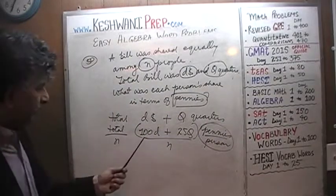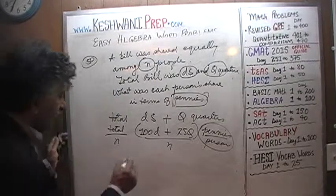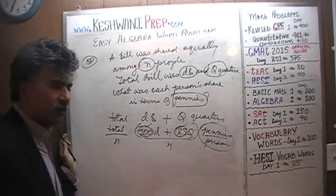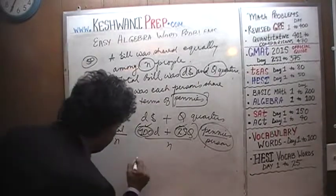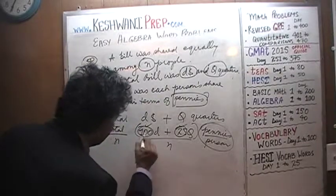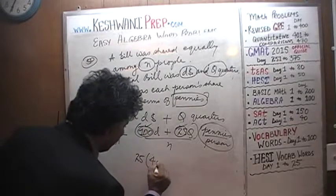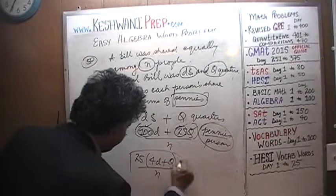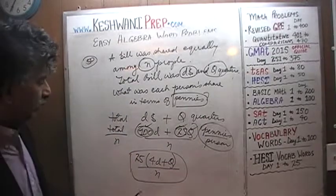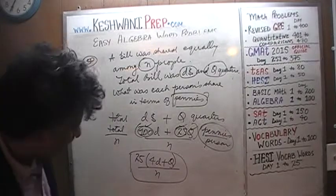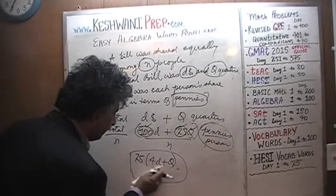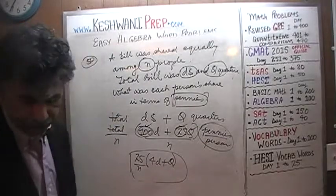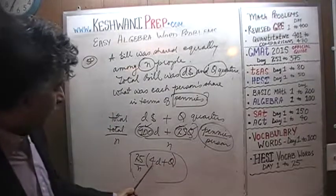Again in the exam, the answer is not going to be presented like this. We have 100 here, we have 25 here. We have a common factor of 25. We need to take out the common factor of 25, take it out common, and we'll end up with 100 divided by 25 is 4, 4d plus q, 25 over n. Now this is how it would look like in the exam. 25 over n, maybe they'll write it like this, maybe simply they'll write it like this: 25 over n times 4d plus q.